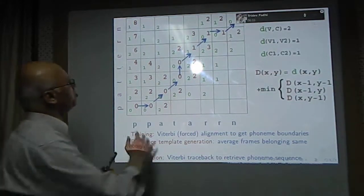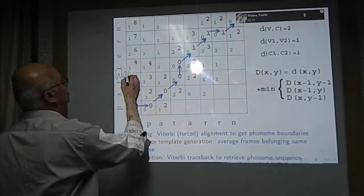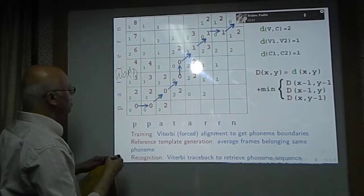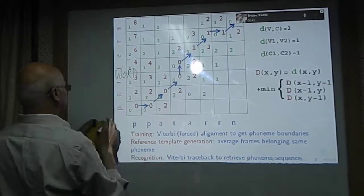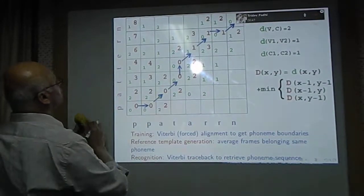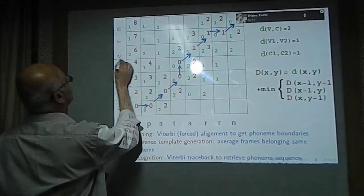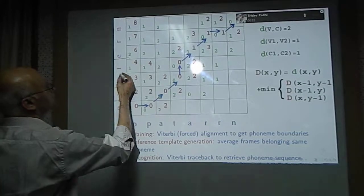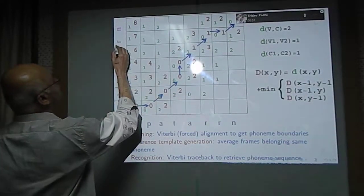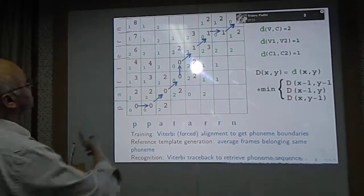Second, suppose our reference template is a spoken word, and in the spoken word we know the phoneme boundaries. The word P is here, A is here, T boundary is here. There are two Ts but they both belong to a single phoneme. So the phoneme boundaries are known because this is the reference pattern.